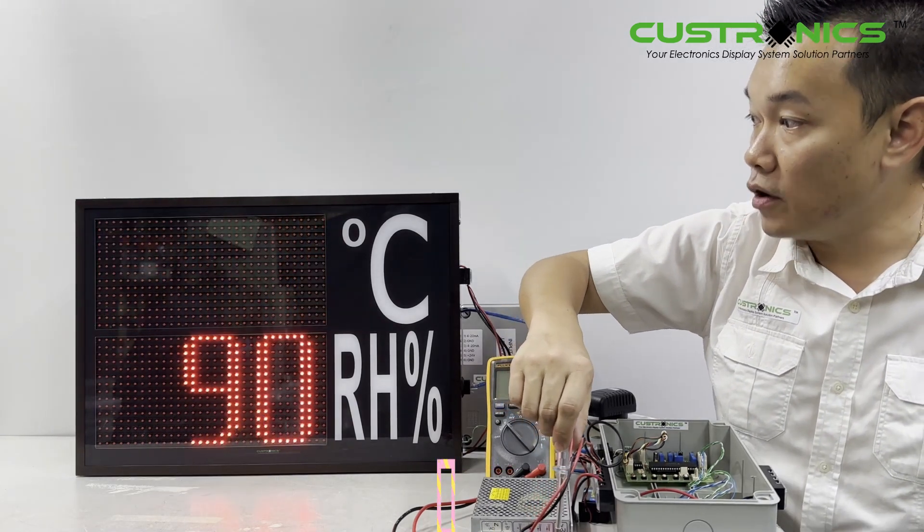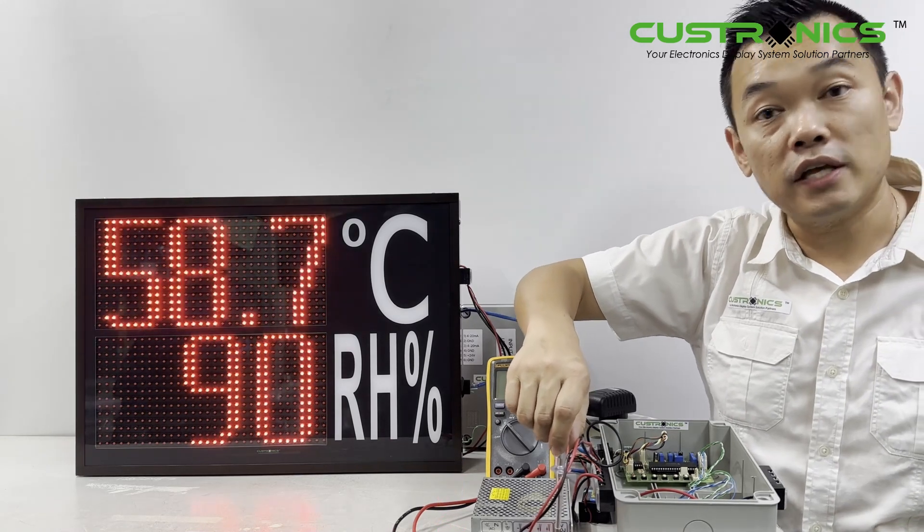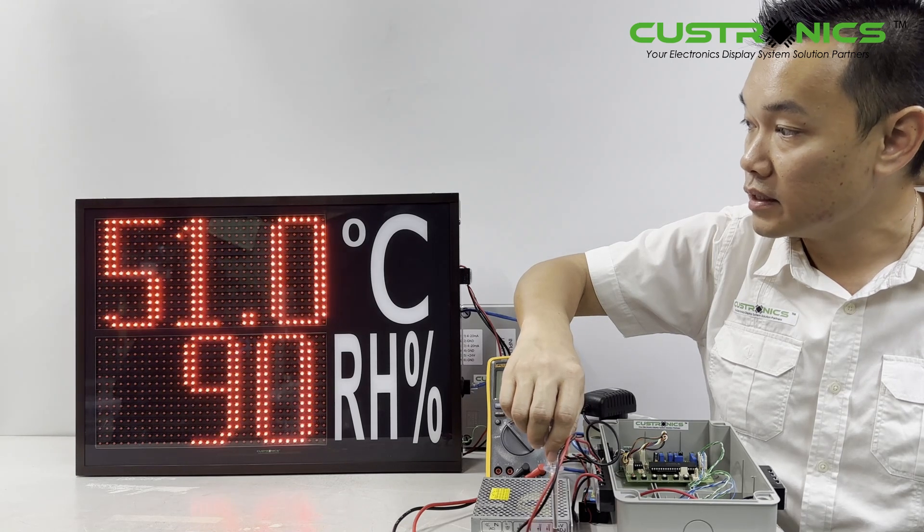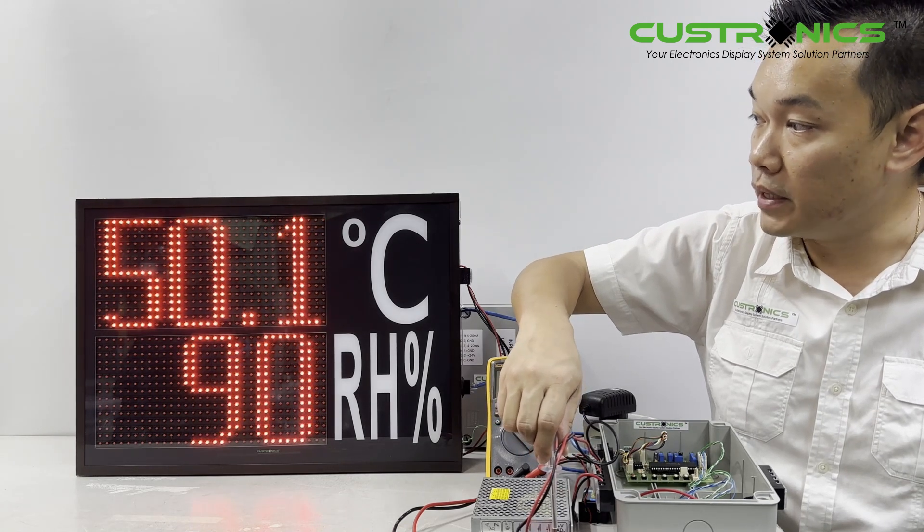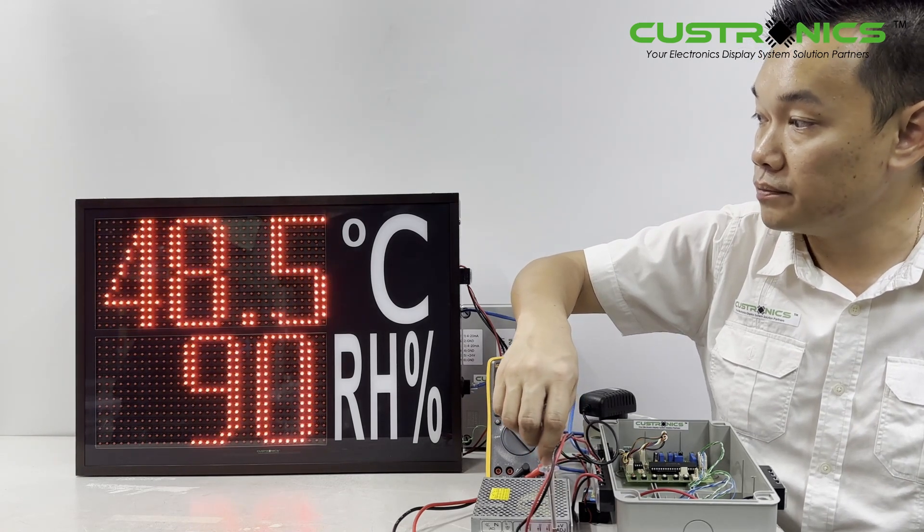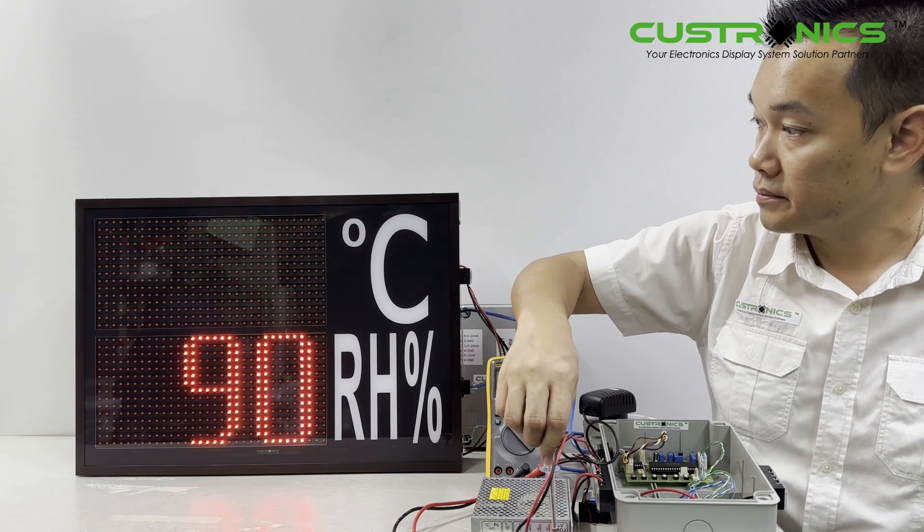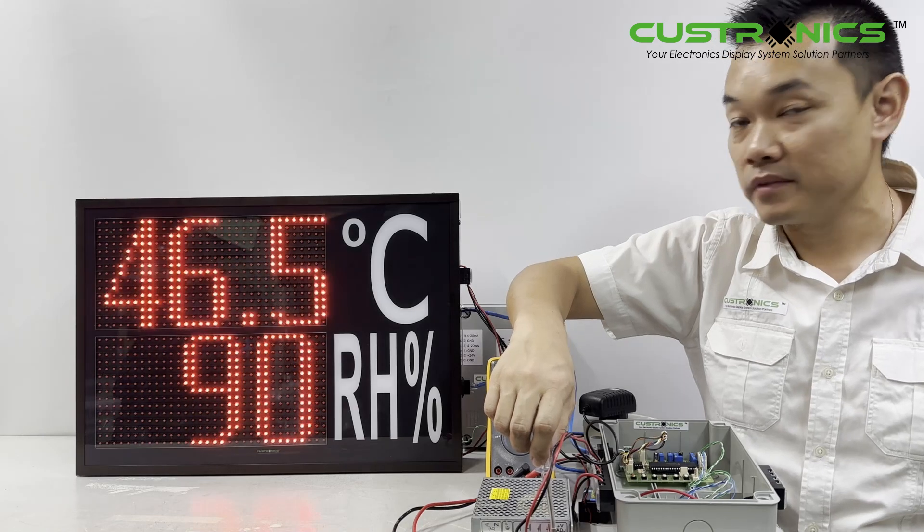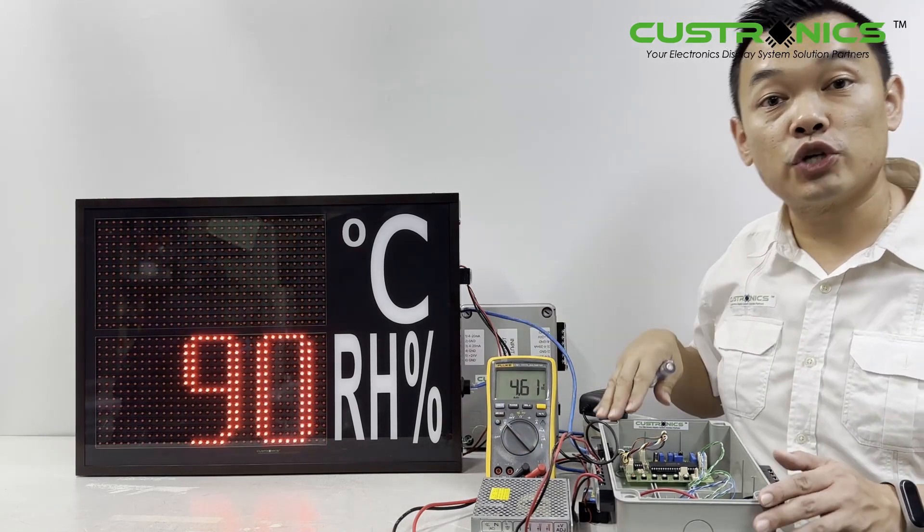When the value exceeds a certain threshold, it will blink. When it is normal, like this, it won't blink. Let me slowly go down. When it's less than the minimum value, it will blink because I've set the threshold here.